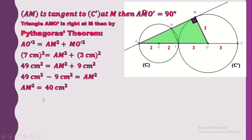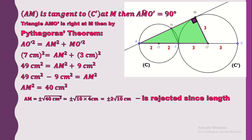We need to find the length of AM, not AM squared. Moving 9 cm² to the other side gives AM² equals 49 minus 9, so AM² equals 40 cm². To remove the squared we take the square root: AM equals √40, and since length is positive, AM equals 2√10 cm. Note that 40 equals 4 times 10, and 4 is 2 squared, so AM equals 2√10 cm.